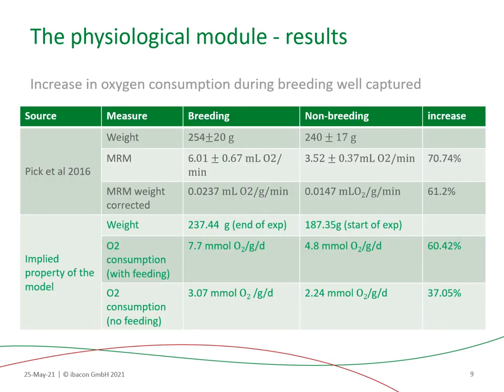We also compared some implied properties of our physiological module to the literature data. In particular, we used data from PIC and collaborators that measured the oxygen consumption between breeding and non-breeding individuals for a closely related species. As we can see here, the observed oxygen consumption increase is very well captured by the model as well.